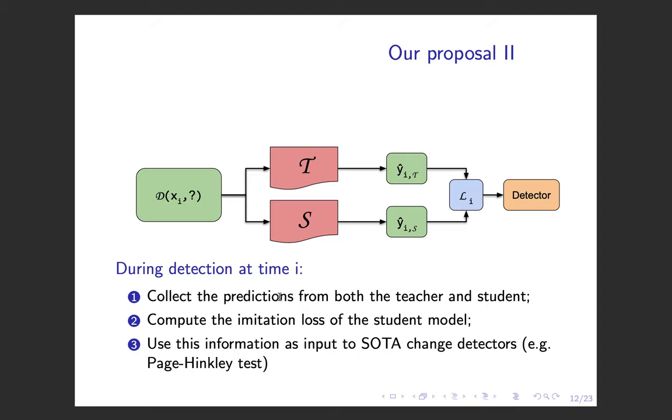During the deployment step, we have some instances and we pass them to both predictive models: our main predictive model T and the student model S. We grab their predictions and measure the distance between them. Basically, this refers to the imitation error of the student model. We pass this error to some detection mechanism, such as the Page-Hinkley test.